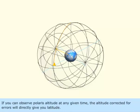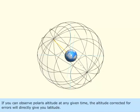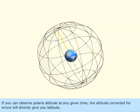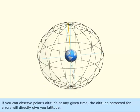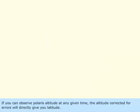If you can observe Polaris' altitude at any given time, the altitude corrected for errors will directly give you latitude.